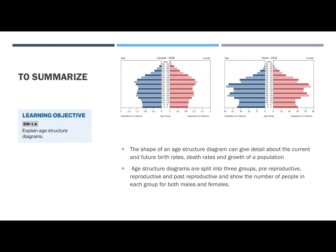To summarize: the shape of an age structure diagram can give detail about the current and future birth rates, death rates, and growth of a population. Age structure diagrams are split into three groups — the pre-reproductive, the reproductive, and the post-reproductive — and show the number of people in each group for both males and females.